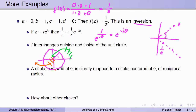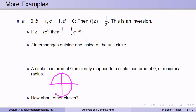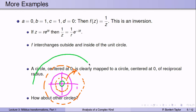A circle centered at the origin is mapped to another circle centered at the origin under 1/z. For example, every point on the circle of radius 1/2 has radius 1/2, and its image has radius 1/(1/2) = 2. So the image is a circle of radius 2. Similarly, smaller circles map to larger circles. A circle centered at the origin maps under 1/z to another circle centered at the origin.